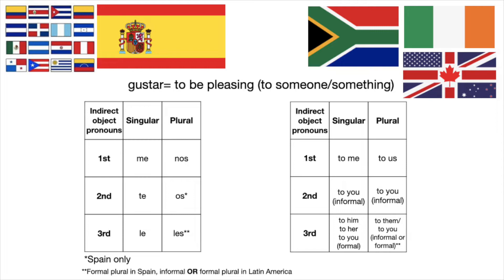Those words in Spanish are: me, te, le, nos, os, and les. Keep in mind that os is only used in Spain because it's the corresponding form that goes with vosotros, and vosotros is a form that's only used in Spain.